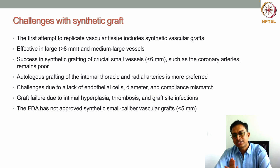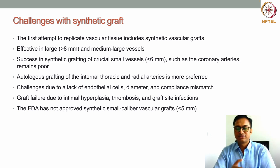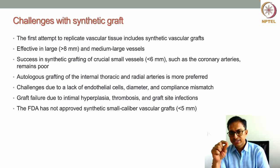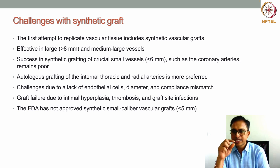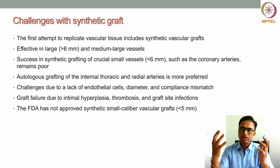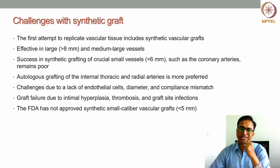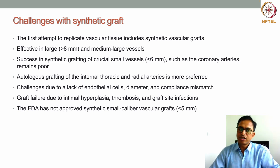Synthetic grafts are not successful for small blood vessels with diameters less than 6 mm, such as those found in coronary arteries, which carry blood to the heart muscles. For these, autologous grafting using vessels like the internal thoracic or radial arteries is the most preferred approach.